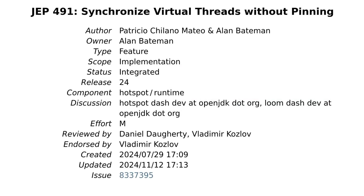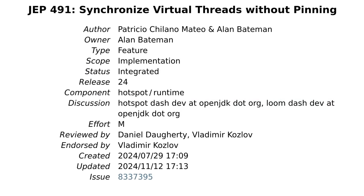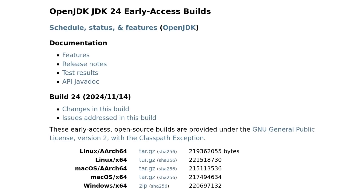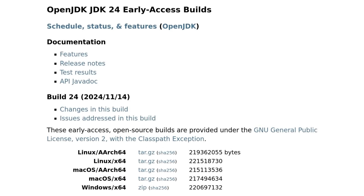Welcome, everyone, to the Inside Java newscast, where we cover recent developments in the OpenJDK community. I'm Nicolai Parlog, Java developer at Fork at Oracle, and today we're going to look at JDK Enhancement Proposal 491, which is already integrated and available in the latest JDK 24 early access build. Links to both in the description.